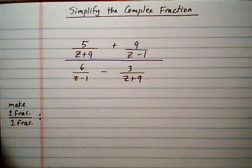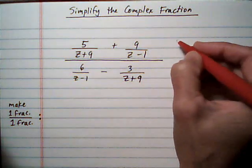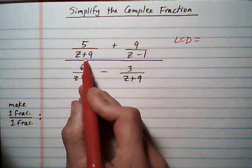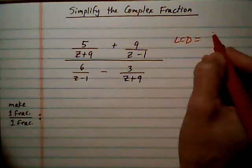First thing we need to make one fraction on top, which means we need to know the LCD at the top. The LCD is z plus 9 times z minus 1.